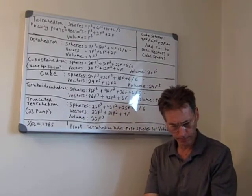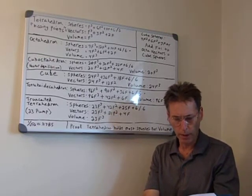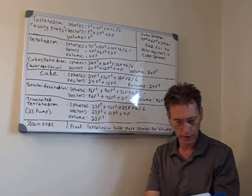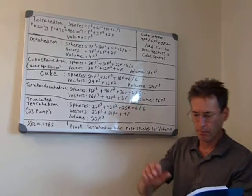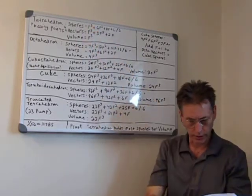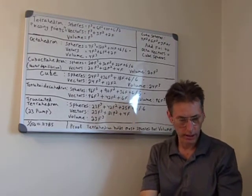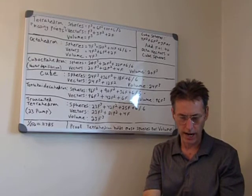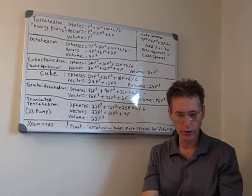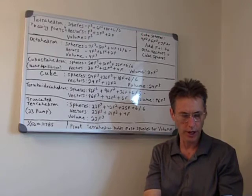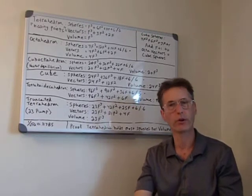Bucky says in Synergetics section 986.112: 'Vectors always represent energy forces of given magnitude operating at given angles upon given entities at given loci.' Remember these loci — the location, the spheres that these vectors are operating around. 'Vectors do not occur singly. They occur only as the family of forces interacting in any given physical circumstance.' When we count the total number of vectors in synergetics as structurally stabilized polyhedrons, we see a family of energy forces which relate identically to the forces within the nucleus of the atom.